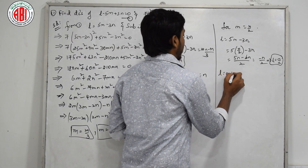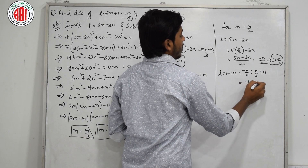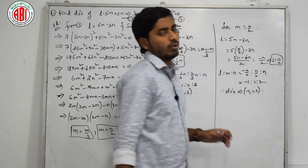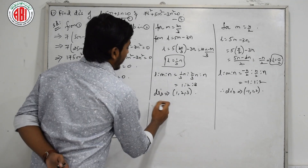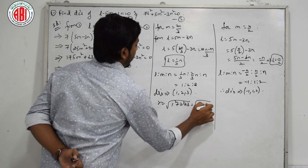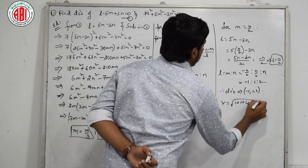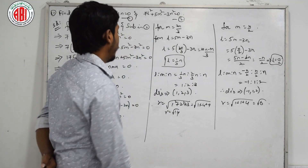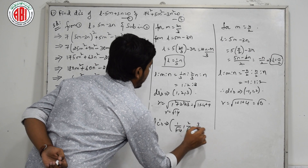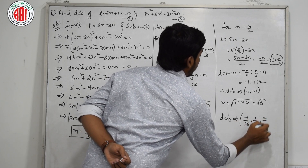For case 2, m equals n/2: l equals 5 times (n/2) minus 3n equals (5n minus 6n)/2 equals minus n/2. The ratio l : m : n is (minus n/2) : (n/2) : n, which simplifies to minus 1 : 1 : 2. So DRs are minus 1, 1, 2. To find DCs: the denominator for case 1 is root of (1² + 2² + 3²) equals root 14, giving DCs of 1/root 14, 2/root 14, 3/root 14. For case 2, root of (1 + 1 + 4) equals root 6, giving DCs of minus 1/root 6, 1/root 6, 2/root 6.